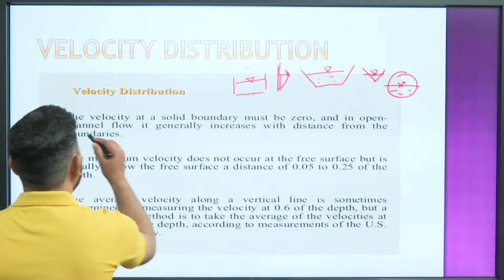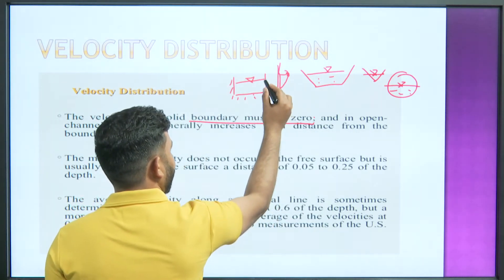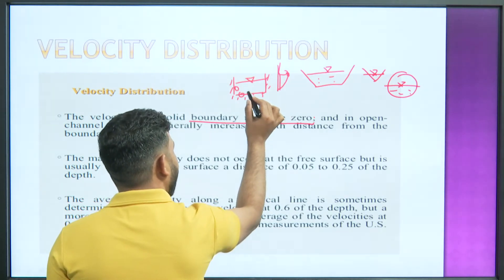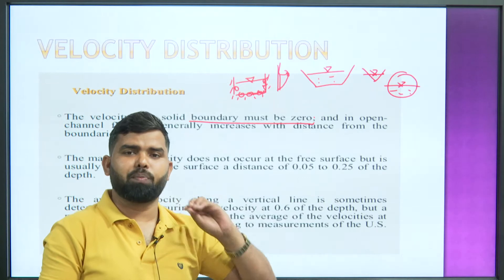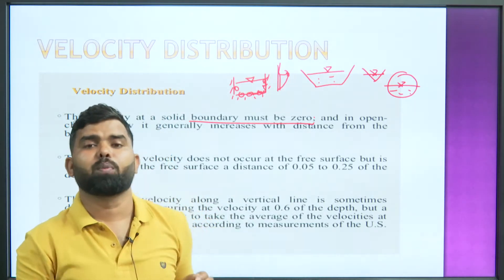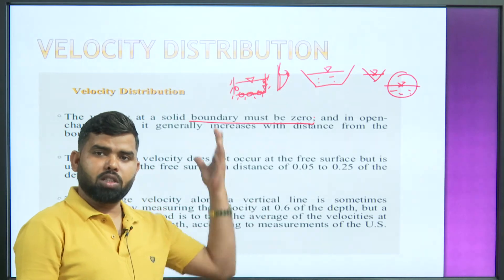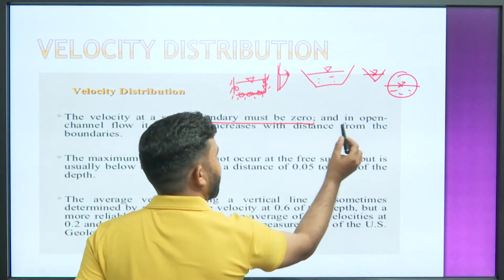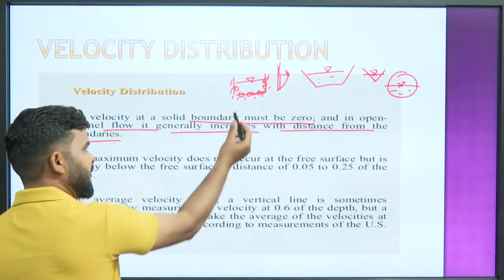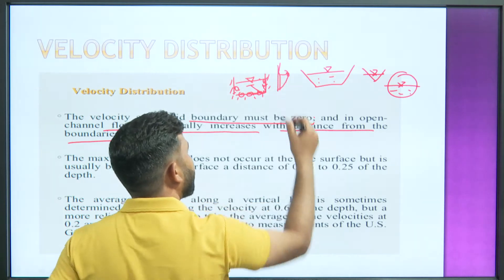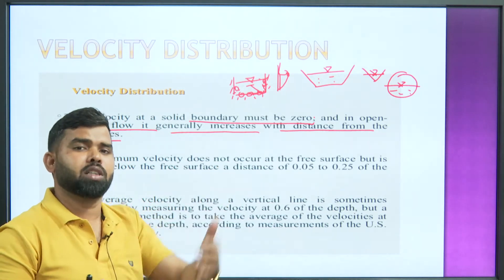Now regarding parameters — the velocity at a solid boundary must be 0. The solid boundary in any channel section: the water particles in contact with it — remember, whenever any fluid comes in contact with a solid boundary, the velocity of the fluid particles equals the velocity of those solid boundary particles, which is 0. So the velocity at the solid boundary becomes 0. In open channel flow, it generally increases with distance from the boundary. As we move farther from the boundary, the velocity of fluid particles keeps increasing.